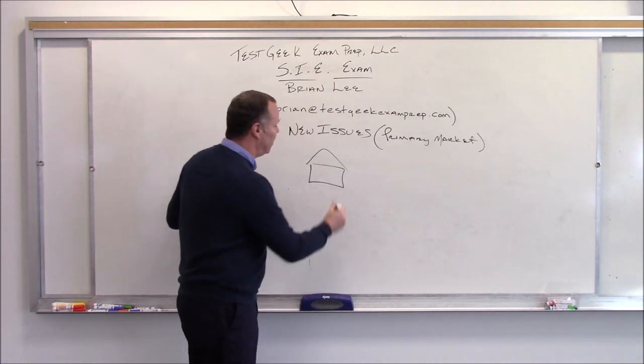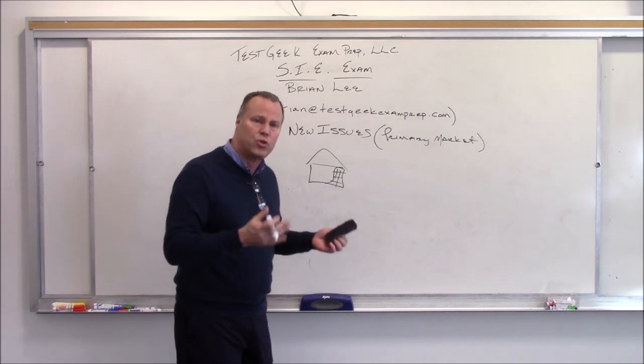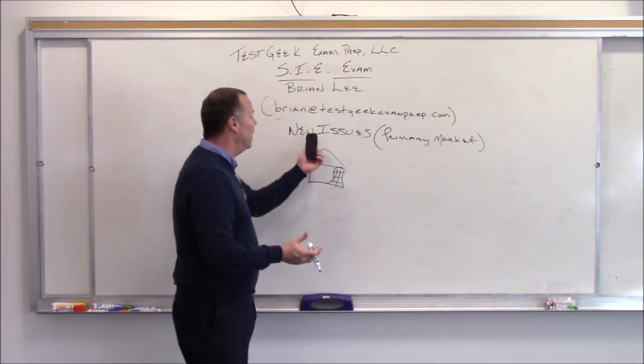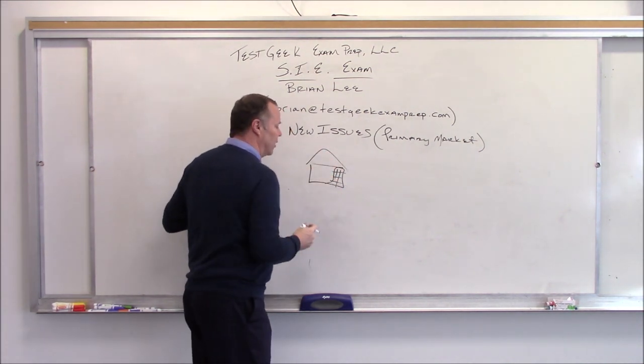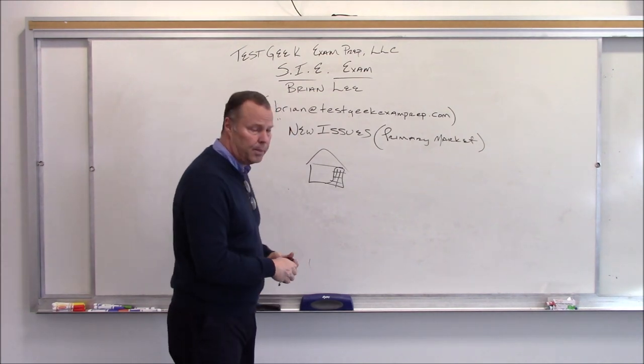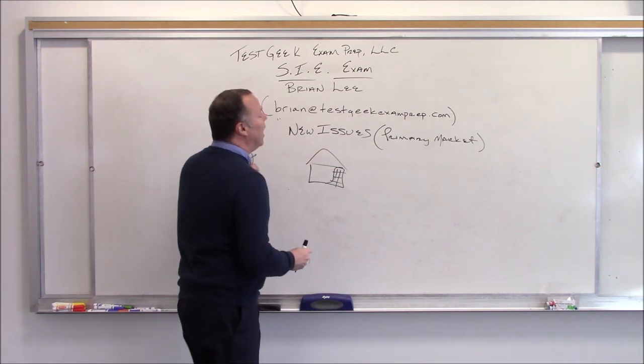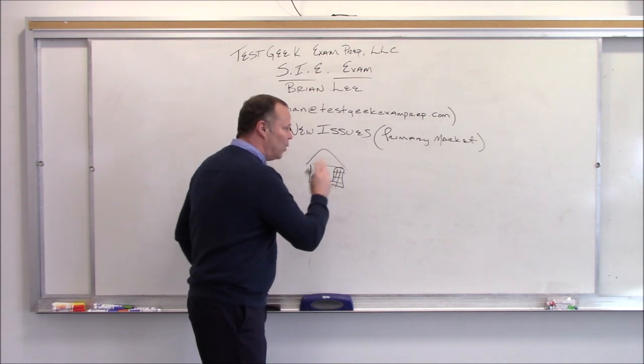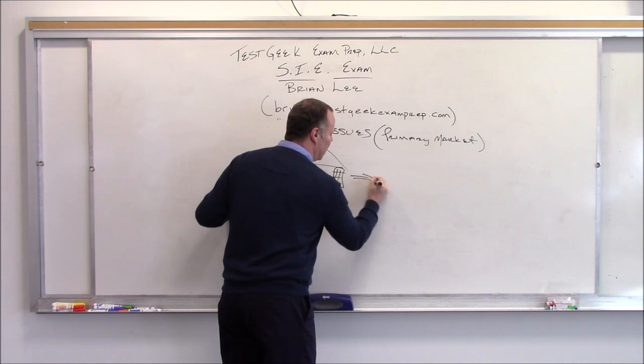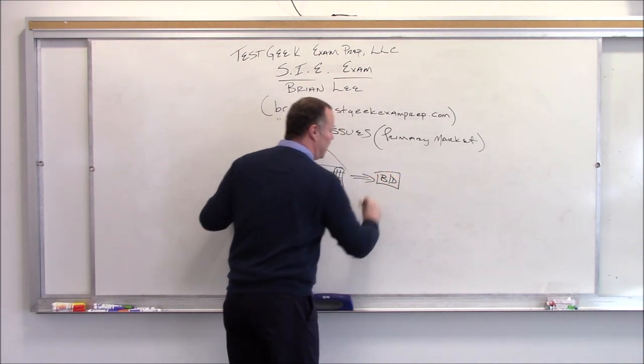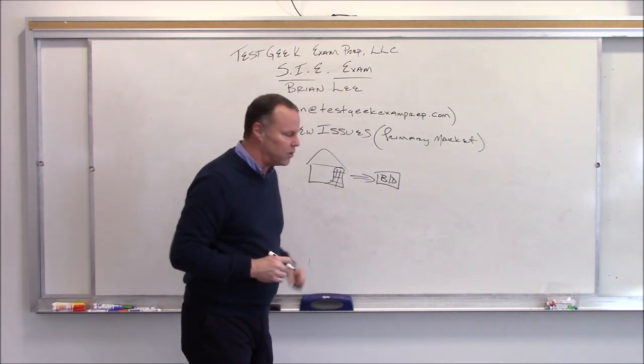And the best way to do that is to sell off a piece of the ownership of the company. In other words, issue stocks or bonds to the public—new issues, new securities. Now, whatever company it is, they're focused on their particular little niche in the world. And issuing securities in the capital markets is really not their forte.